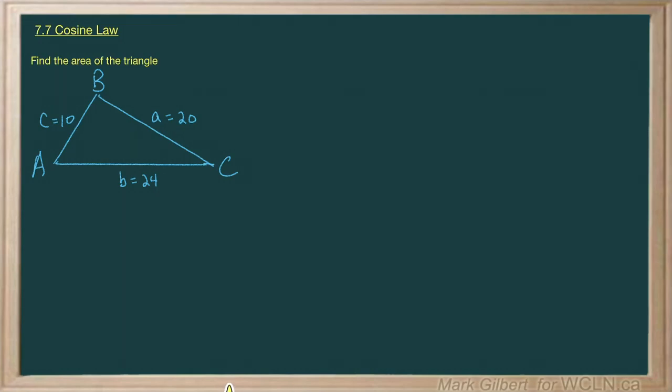Find the area of the triangle. Area of a triangle, if you remember, is one-half base times height. So looking at what we have here, we have a base, and that just happens to be b equals 24, so that's good.